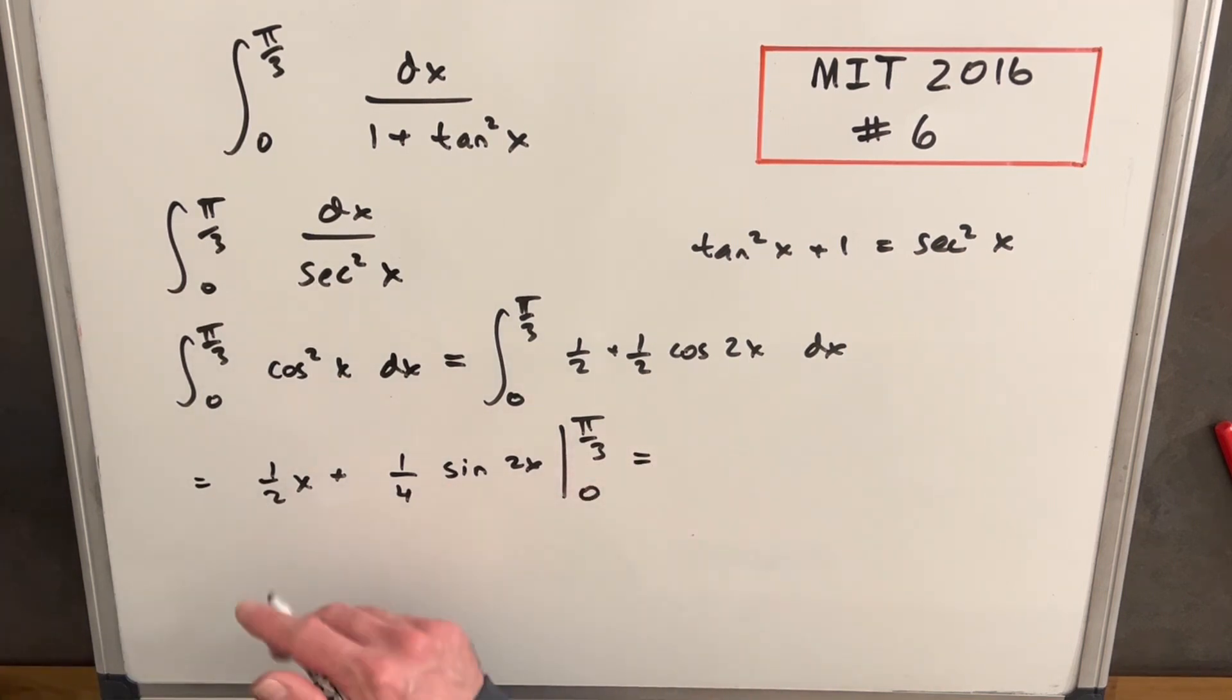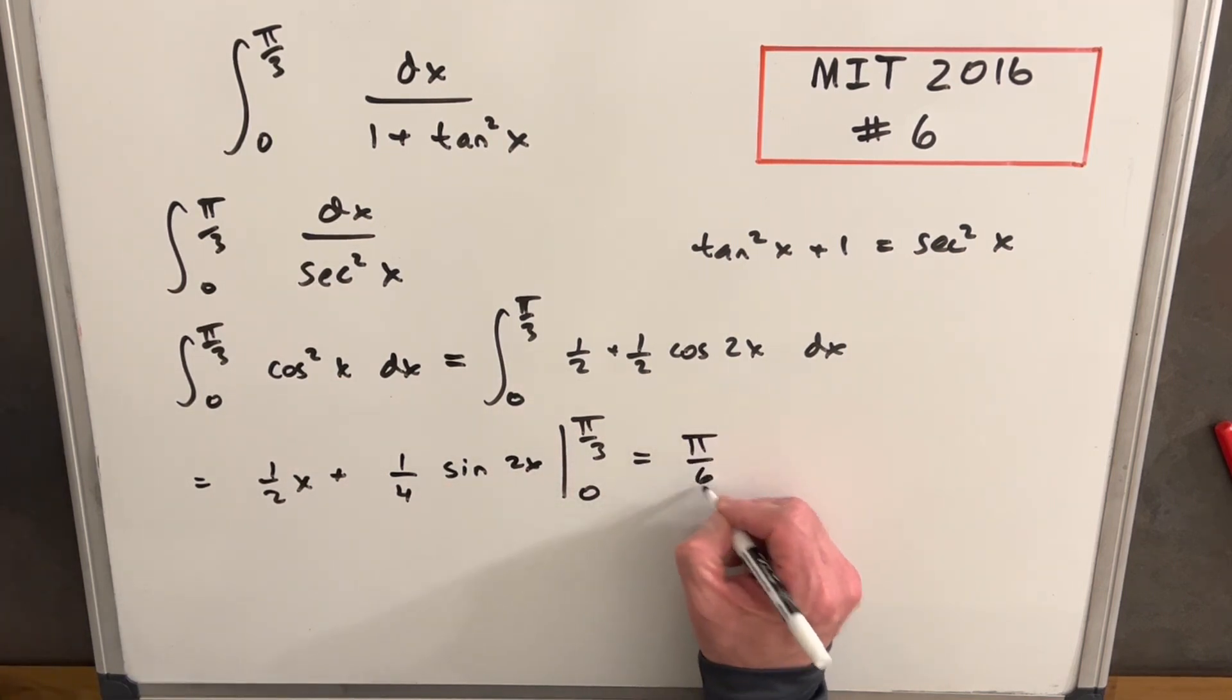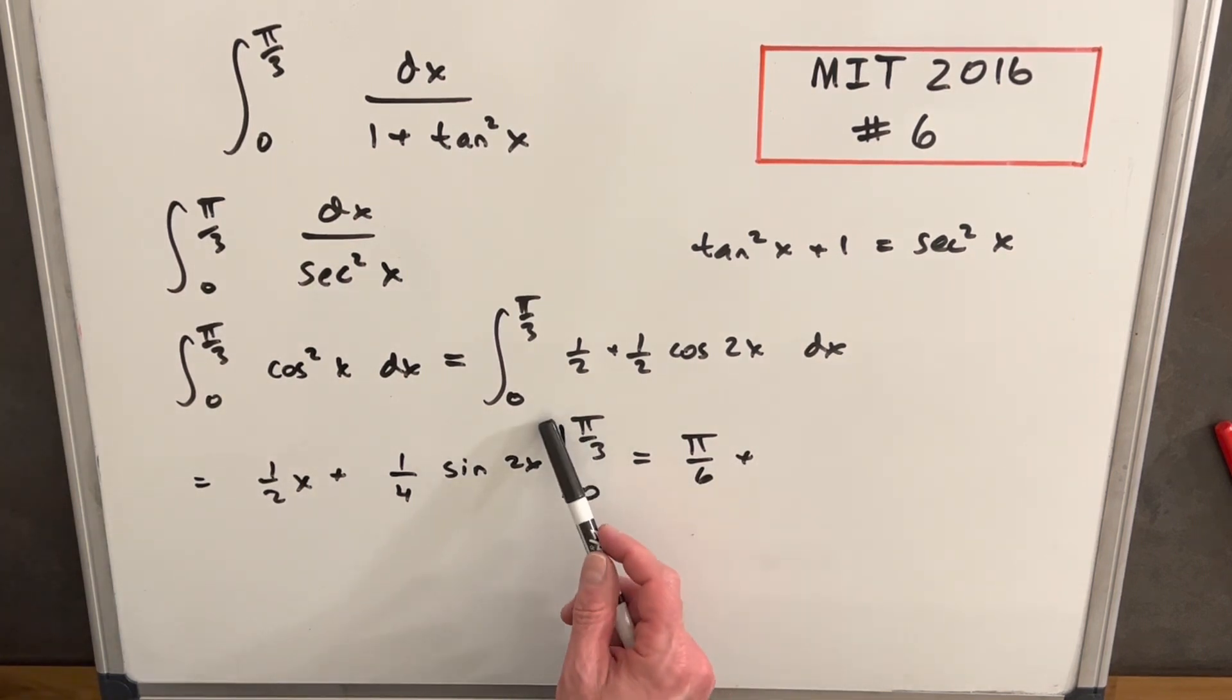Let's plug in our pi over three. So half times pi over three is pi over six plus one-fourth. Next plugging in pi over three into our 2x, that's going to be 2 pi over three.